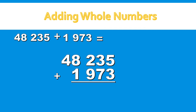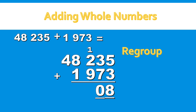5 ones plus 3 ones gives 8 ones. 3 tens plus 7 tens gives 10 tens. We have to regroup. We place our 0 under our tens column, and we place our 1 at the top of our hundreds column. 100 plus 200 plus 900 gives us 12 hundreds. We place our 2 under our hundreds column, and place our 1 at the top of our thousands column. 1,000 plus 8,000 plus 1,000 gives us 10,000. We place our 0 under our thousands column, and our 1 at the top of our ten-thousands column.